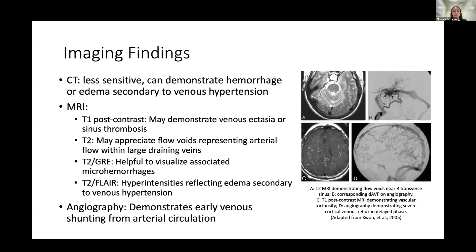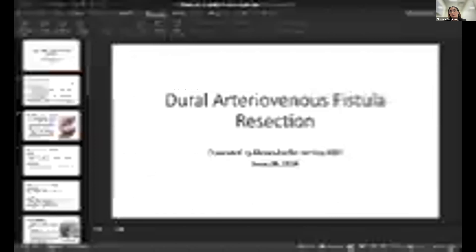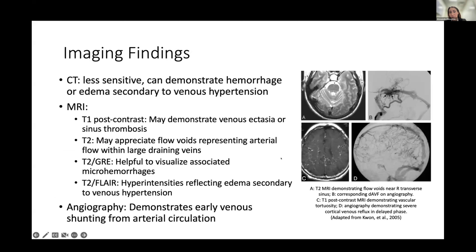It's very important to perform internal carotid, external carotid, and vertebral artery angiography on both sides to get a complete picture of the patient's vasculature. Here on the images, image A shows a T2 MRI demonstrating a collection of flow voids near the right transverse sinus corresponding to this lesion. And in image C, MRI demonstrates venous ectasia that corresponds to this lesion on angiography.